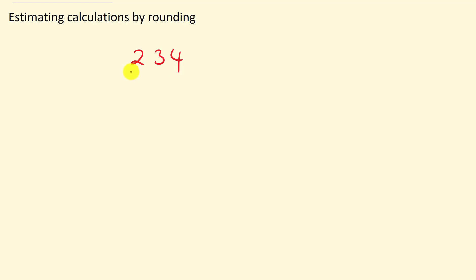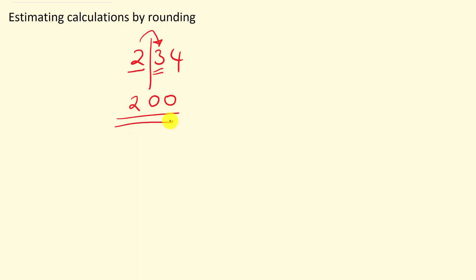If the number starts with a digit between 1 and 9, that is our first significant figure. Draw a line after the first significant figure and look at the number after the line. If that number is 5 or over, add 1 to the first significant digit. Here the digit is 4 or less, so the 2 remains unchanged and the next two digits become zeros. So 234 rounded to one significant figure is 200 — we are rounding to the nearest hundred.